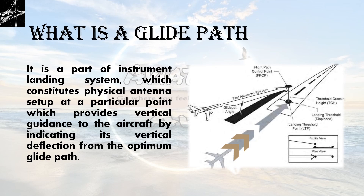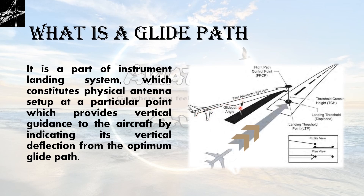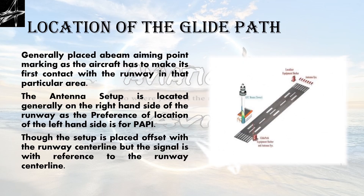We can observe here that this is an approaching aircraft towards a runway. The Glide Path is an instrument which provides the exact line of propagation for an aircraft so that it could land on the aiming point — the location of the Glide Path, generally placed abeam the aiming point marking, as the aircraft has to make its first contact with the runway in that particular area.